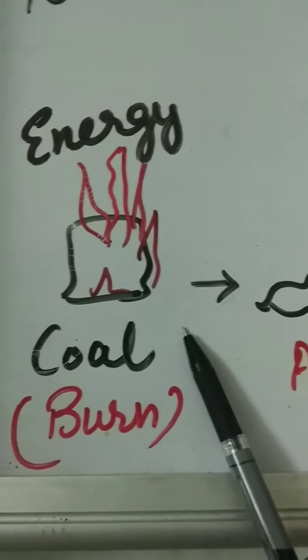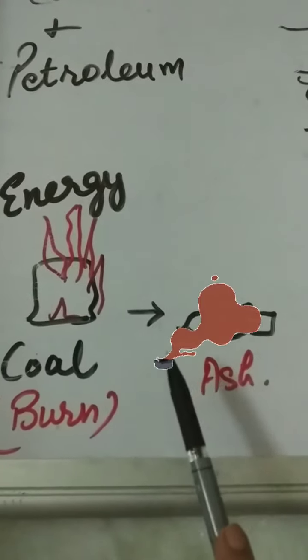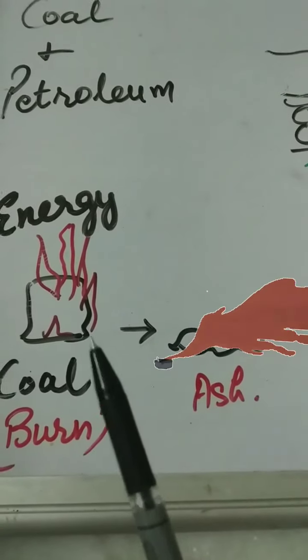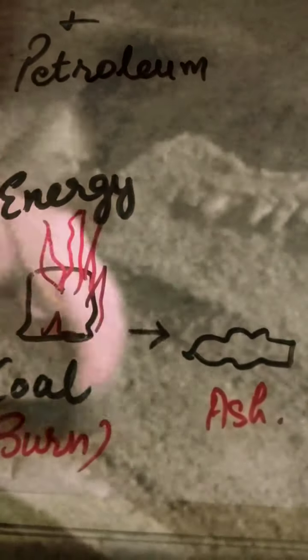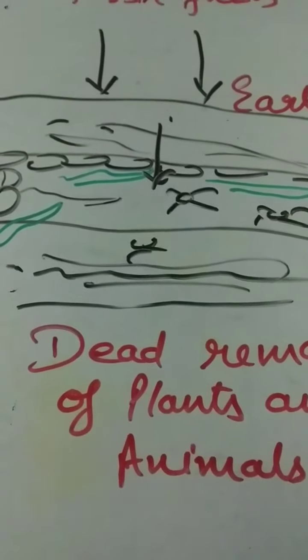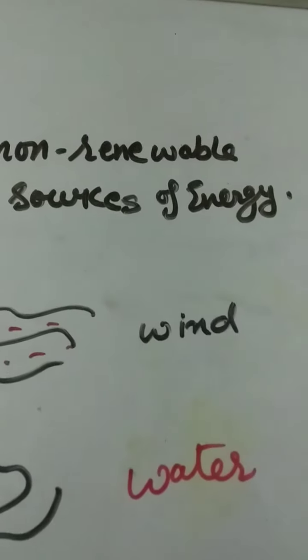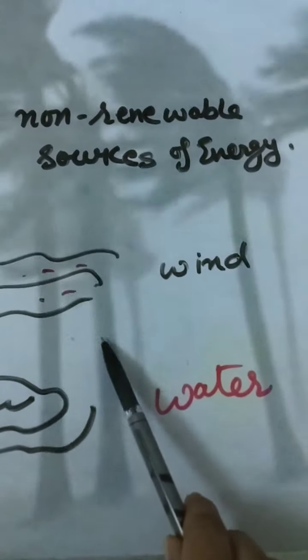When we burn coal it turns into ash. Can we change ash back into coal form? No, it is not possible. So these forms of fuel are very difficult to replenish, as they take millions of years to be formed. Thus we call them non-renewable sources of energy. We can conserve fossil fuels by using renewable sources of energy like wind, water, and solar energy.